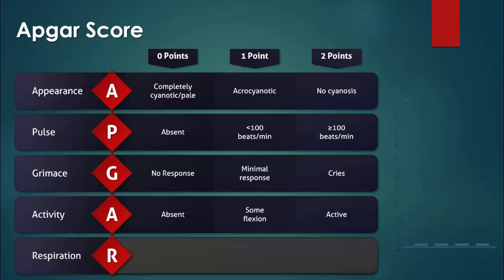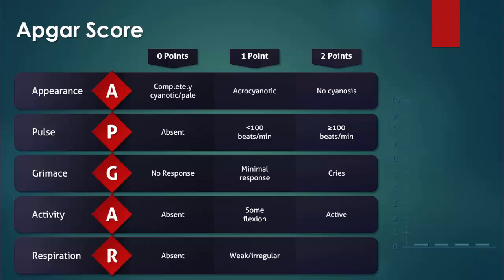R stands for respiration and it refers to the quality of breathing. Zero points are given if the baby is not breathing. One point is given if the baby has a weak cry or is breathing slowly and irregularly. Two points are given if the baby has a strong cry or has a normal rate and effort of breathing.